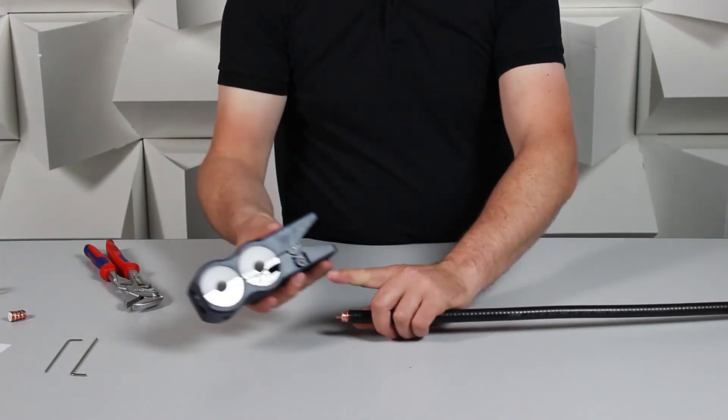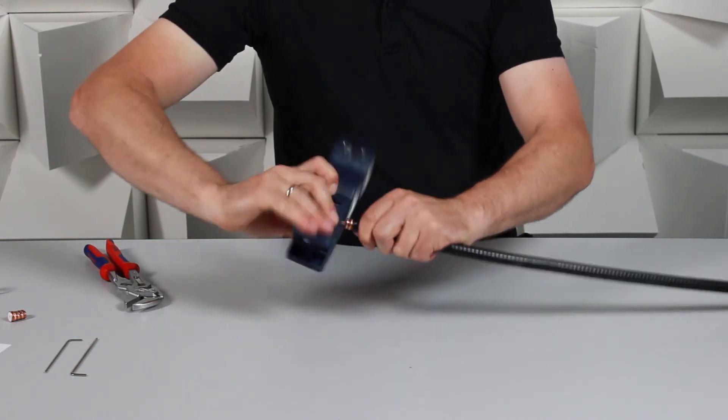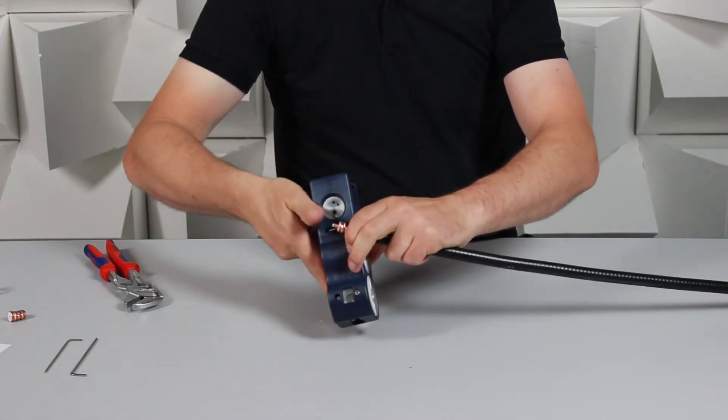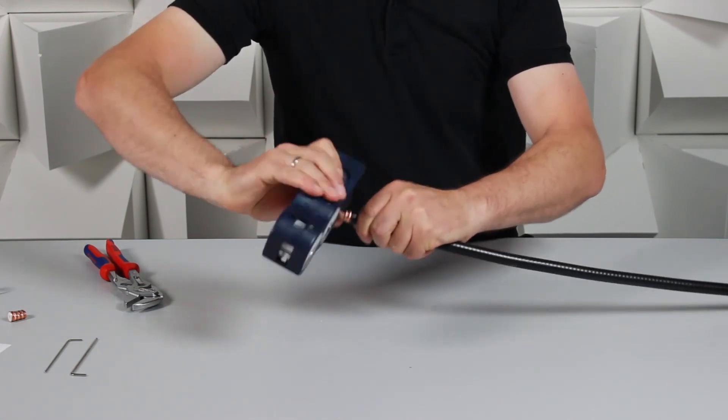Our tool also offers the beveling function. Simply insert the cable and turn from left to right. Revolve the cable and repeat to ensure a clean finish.